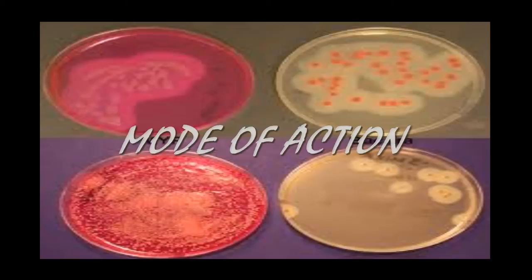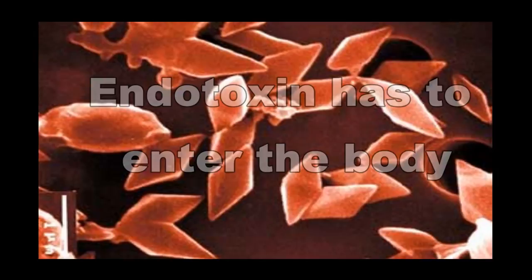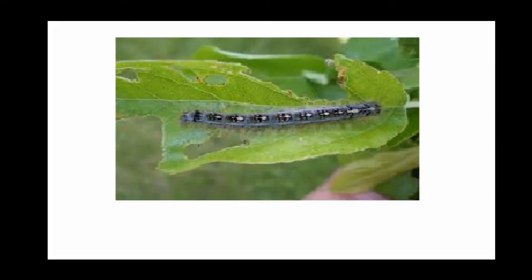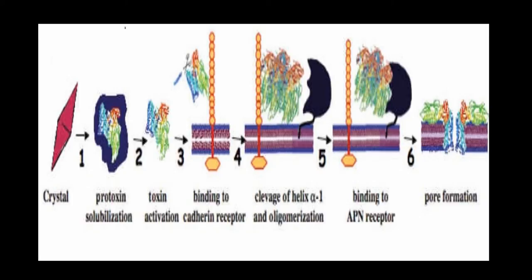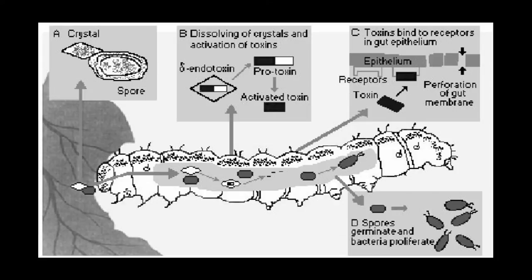In order to act on the larva, first the endotoxin has to enter its body. When the larva feeds on the Bt crop, the endotoxin enters the larva as a protoxin. Protoxin is the inactivated form of the toxin. Processing of protoxin into active toxin requires an alkaline environment. The insect's gut is alkaline in nature, and this alkalinity enhances the conversion of protoxin into active endotoxin.